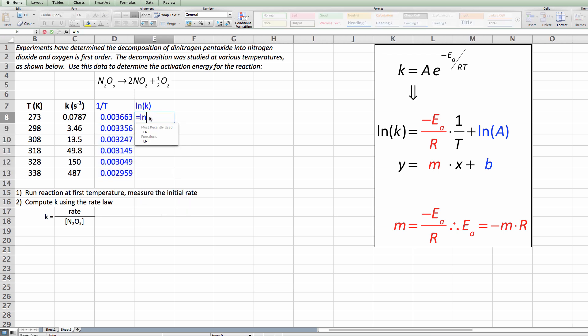We then drag this down and we get it to recalculate for all six data points. Same thing, this is equal to the natural log of that cell there. We can now click on this and drag it down as well and we now have two columns of data which represent our data.